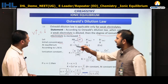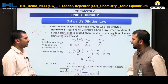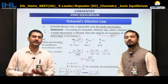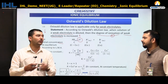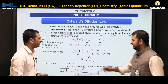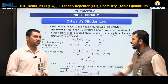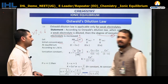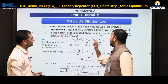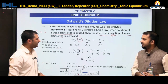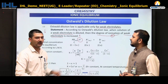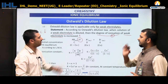At equilibrium, the concentration of AB remaining is C(1 − α), and the concentrations of A⁺ and B⁻ are each C·α, using stoichiometric coefficients of 1. According to the law of mass action, the ionization constant K = [A⁺][B⁻]/[AB] = (C·α × C·α) / (C(1 − α)) = C·α² / (1 − α).